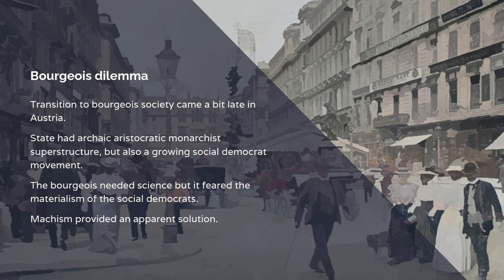The nascent bourgeoisie in these areas knew they needed science. Science was the basis of the modern industry, which was spreading from Britain through France and Germany, and they needed to adopt it. But they feared the materialism of the Social Democrats, which threatened their class rule, and particularly threatened the whole monarchical aristocratic superstructure of the Austrian state.